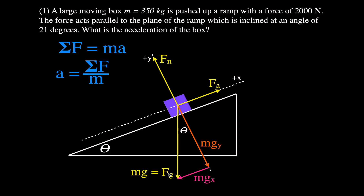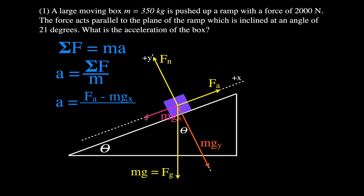Now we can sum up those forces. Remember that this angle is 21 degrees, and by similar triangles this angle here is also 21 degrees. We have only two forces acting along the axis of motion — the x-axis. The applied force is acting in the positive direction, and the mgx component is acting in the negative direction. So we sum those two forces: positive applied force minus mgx, divided by the mass.